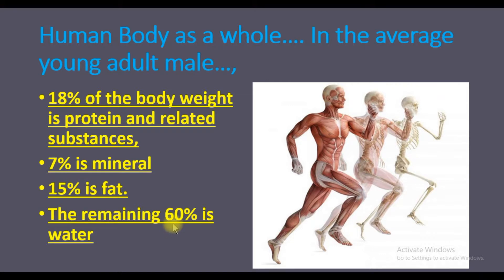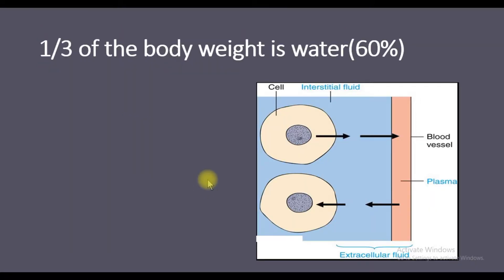That means one-third of the body is water. Let's see more details of water distribution. Total one-third of body weight is made up of water, which is approximately 60% of total body weight.